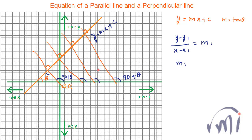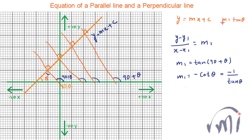That means m1, which is the slope of lines perpendicular to our original line, will be equal to tan(90 + theta). And tan(90 + theta) is nothing but −cot theta, or equivalently −1/tan theta. Since tan theta is the slope m of the original line, the slope of all perpendicular lines will be −1/m. So all lines with slope −1/m will be perpendicular to all lines with slope m.